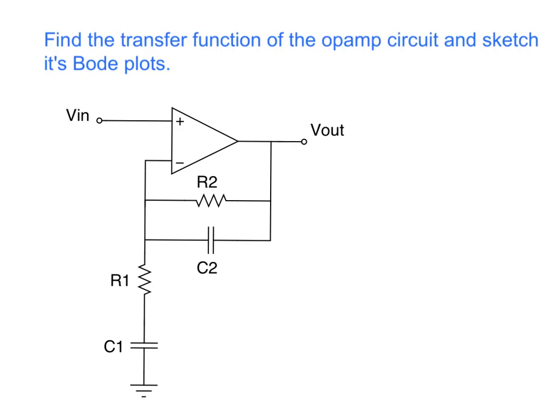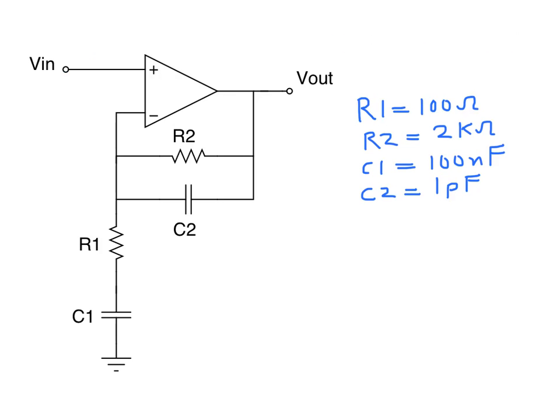I have written down the values of the resistors and capacitors here. The values of the resistors R1 and R2 set the gain of the op-amp circuit. This is the gain at the mid-band region, or the flat region, of the frequency response. Please note that this op-amp circuit configuration is non-inverting, and the gain at the mid-band region is given by this formula.